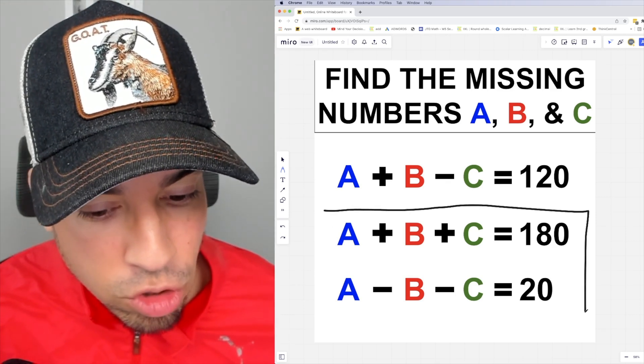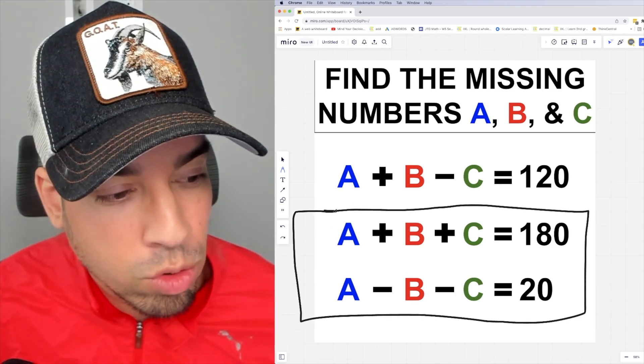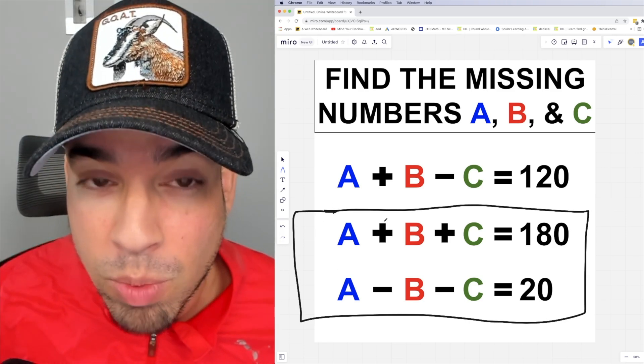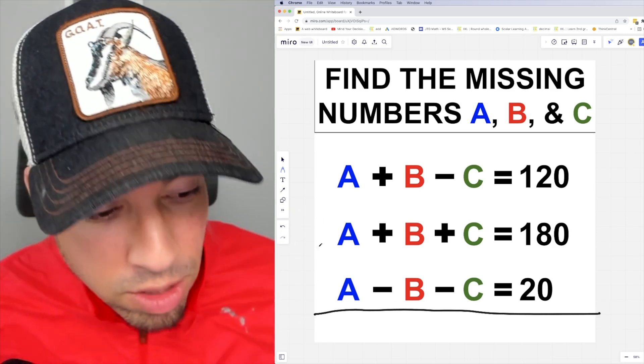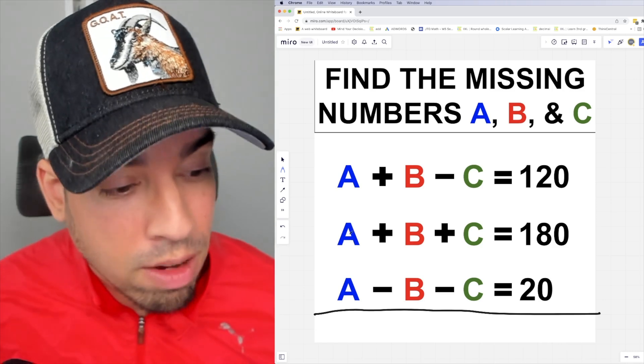If we start by taking just these two equations, what we can do is actually add them together and figure out what A is. If I simply place a line here and add them together, watch what happens.